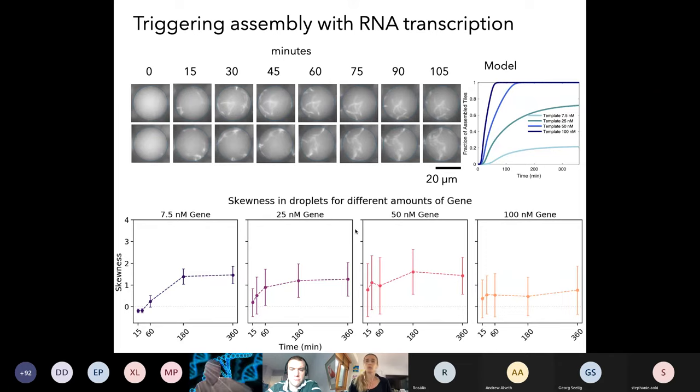At some point, when you use too much gene, you get assembly that happens immediately. However, these images, I'll tell you, they have quite a bit of aggregation. These results are consistent with what you would predict with an unfitted model that, again, is adapted from the Zhang and Hariadi model that I mentioned at the beginning, but includes also the reactions for transcription and degradation.